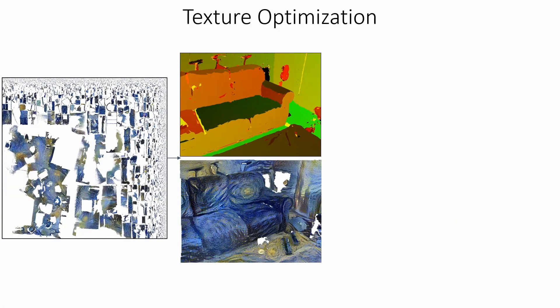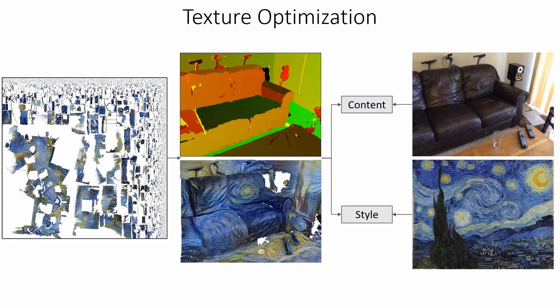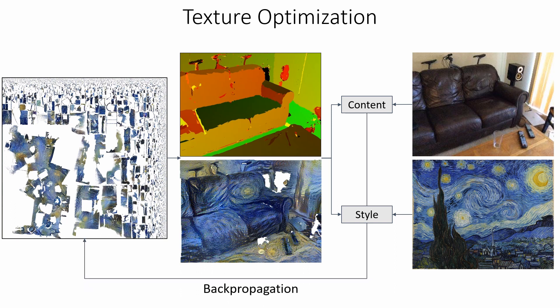We optimize a texture by sampling it with a UV map for each view. Then we compare the rendered image in 2D content and style losses. Backpropagation to the texture space allows us to optimize a complete texture from multiple views.